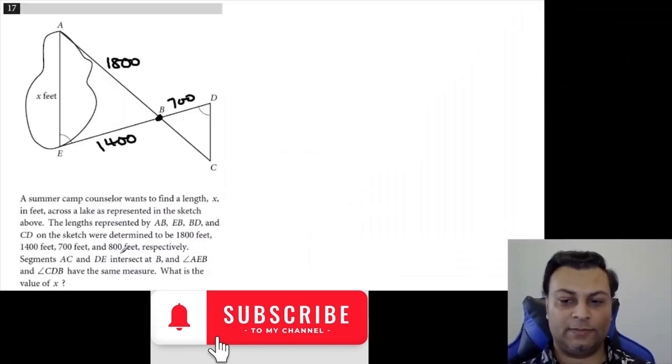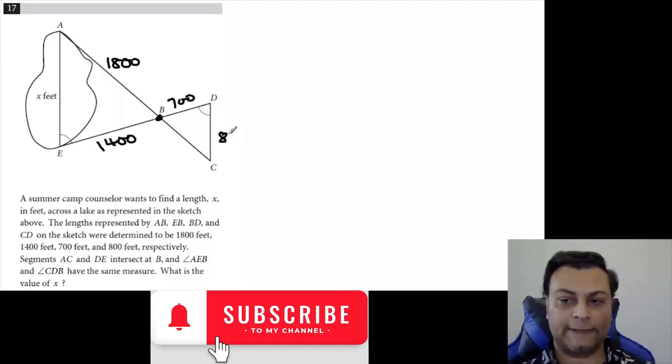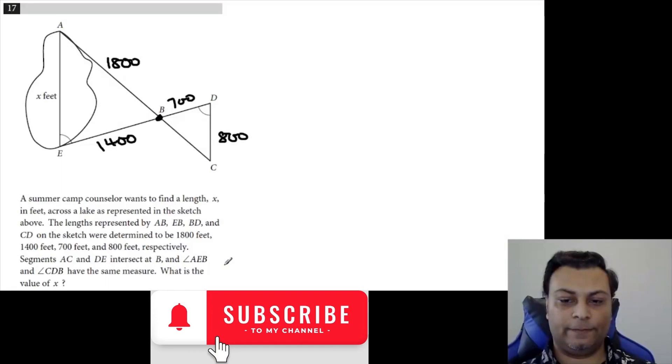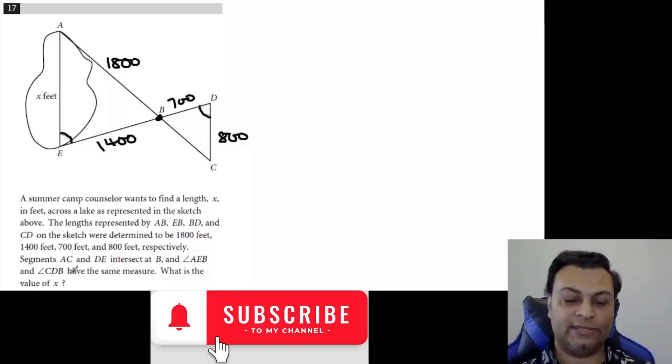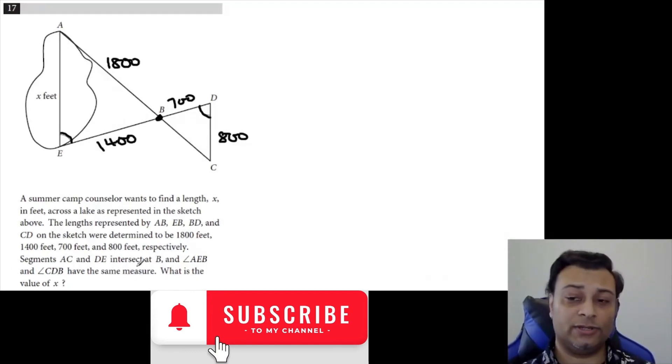Respectively means they're just in order. And CD is 800, so CD here is 800. And they mentioned that these angles are the same - angles AEB and CDB have the same measure. They're congruent angles, and these two are congruent also because they are vertical angles.